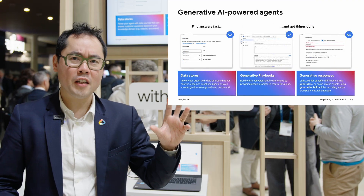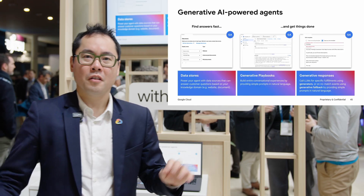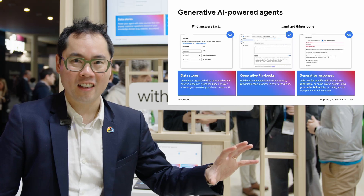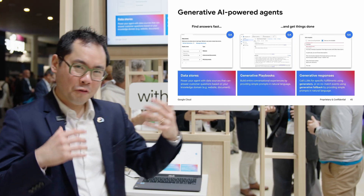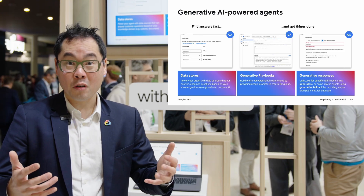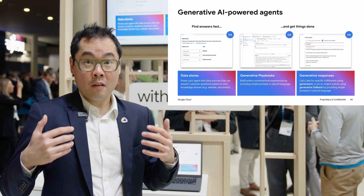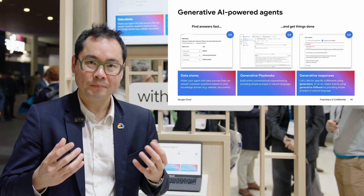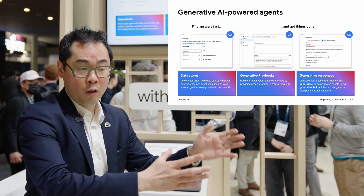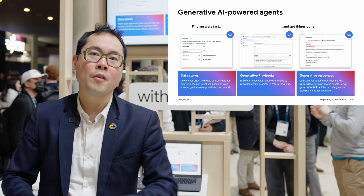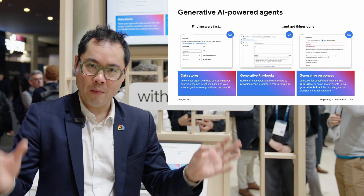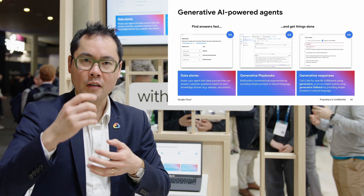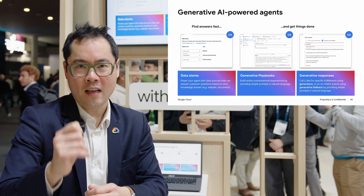There are two key scenarios with Conversational Agents: helping your customers find information — informational scenarios — and helping your customers get things done — transactional scenarios. To find information and get answers fast, we have data stores. Data stores are a managed RAG product where we've provided a whole bunch of updates in 2024 and now for 2025 to improve performance. You provide your documents — from your website, a GCS bucket, or via one of our connectors — and we index all that information, create embeddings, create the vector store, and in real time find relevant documents and return the right response.